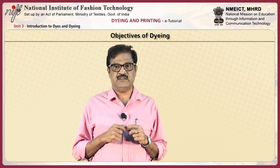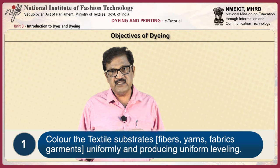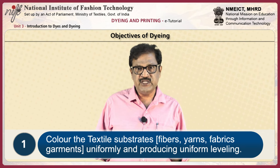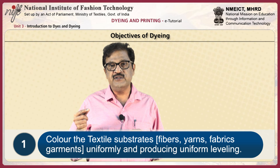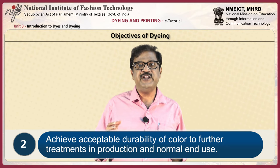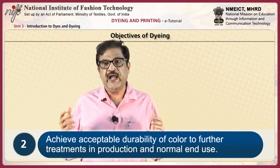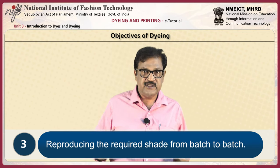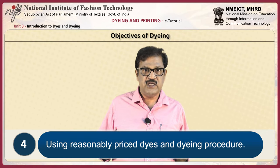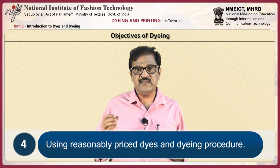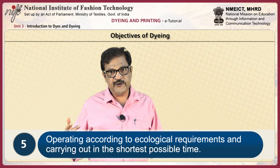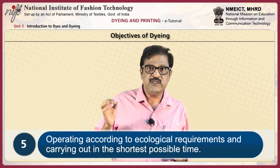Objectives of the textile dyeing process. First, color the textile substrates like fibers, yarns, fabrics, and garments uniformly and to produce the required depth of shade. Second, achieve acceptable durability of color to further treatments in production and normal end use. Third, reproducing the required shade from batch to batch. Fourth, using reasonably priced dyes and dyeing procedures. Fifth, operating according to ecological requirements and carrying out in the shortest possible time.